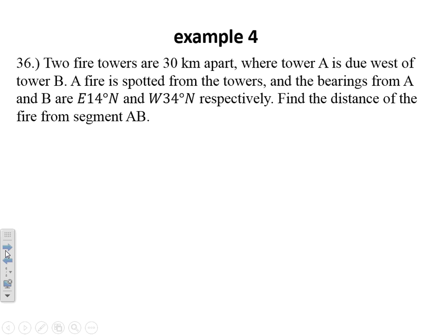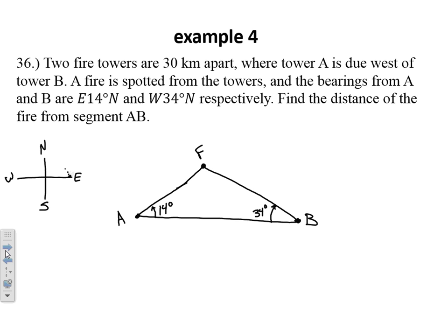Our next problem, number 36 from your textbook. Two fire towers are 30 kilometers apart. Tower A is due west of Tower B. So here's Tower A. There's Tower B. With A being due west, we know they are 30 kilometers apart. A fire is spotted from the towers and the bearings from A and B are from the east 14 degrees towards the north from Tower A. So if I think about a compass rose here, we got north, south, east, and west. That angle is starting off in the east and they're measuring it towards the north, 14 degrees. That's how I'm getting this coming from angle A. And from the west, 34 degrees towards the north from B. So 34 degrees here from B. So that point F is where our fire is happening.